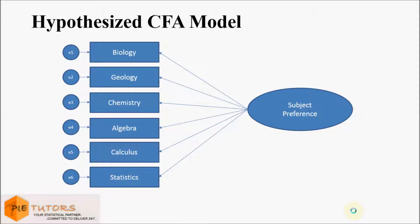In confirmatory factor analysis, the researcher first develops a hypothesis about the factors believed to be underlying the measures used. Further, he or she may impose constraints on the model based on these a priori hypotheses, forcing the model to be consistent with theory. For example, if it is hypothesized that there is just one factor accounting for the covariance in the measures, the researcher creates a model where all measures load on a single factor.